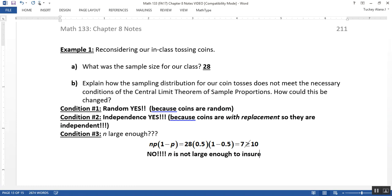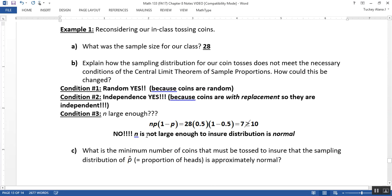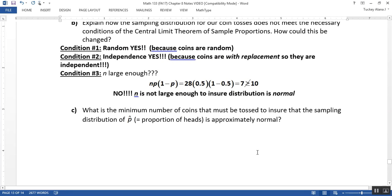N is not large enough to ensure the distribution is normal. And we saw that in our graph because it was skewed to the left a bit. So it does not meet the conditions. In particular, it doesn't meet condition number 3, N, which is not large enough to ensure normal.